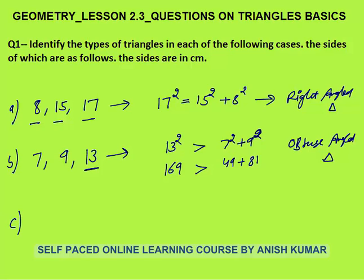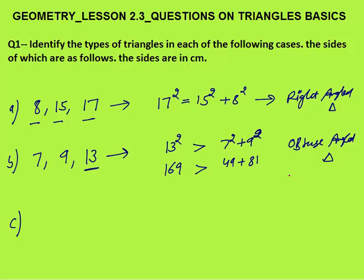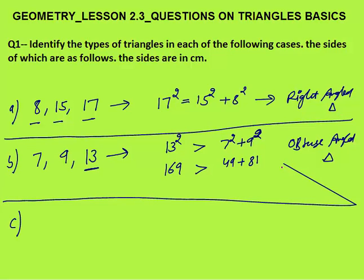On the basis of sides, all sides are different, so this is also a scalene triangle — it is both a scalene triangle and an obtuse angle triangle. Similarly, the first case is also a scalene triangle since all sides are different. You have to determine the triangle in both ways: on the basis of sides as well as on the basis of angle.